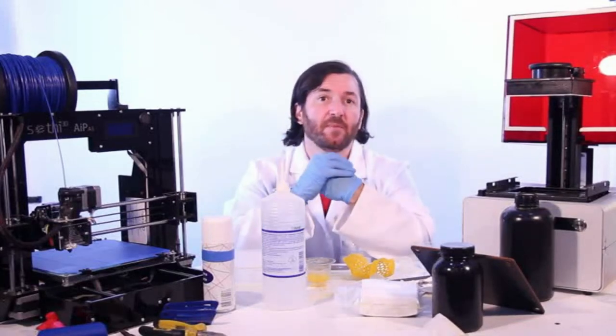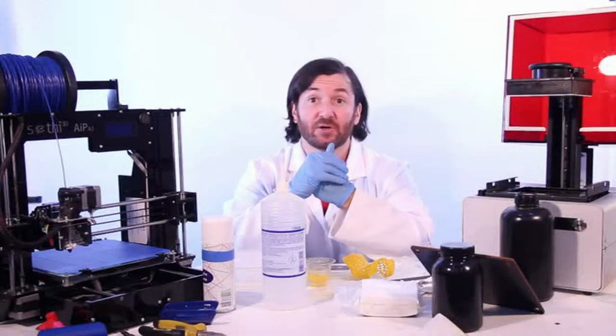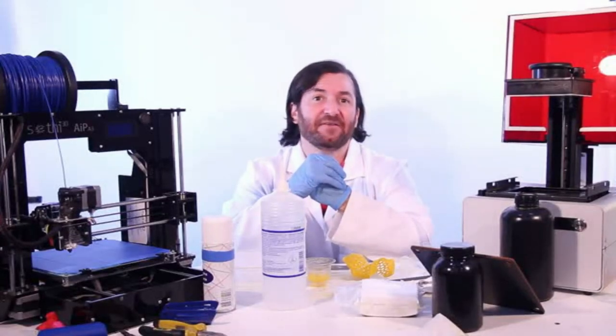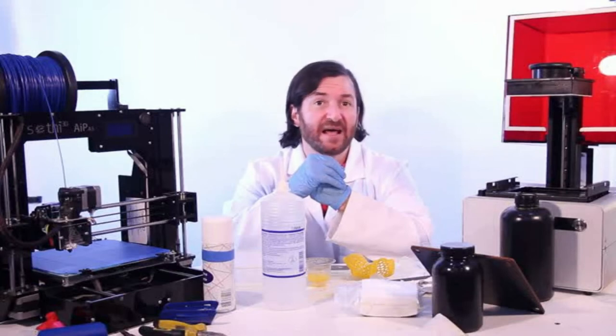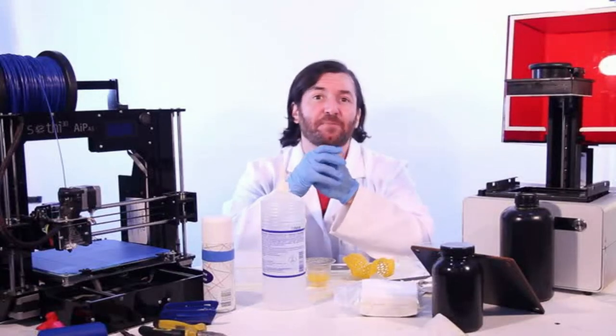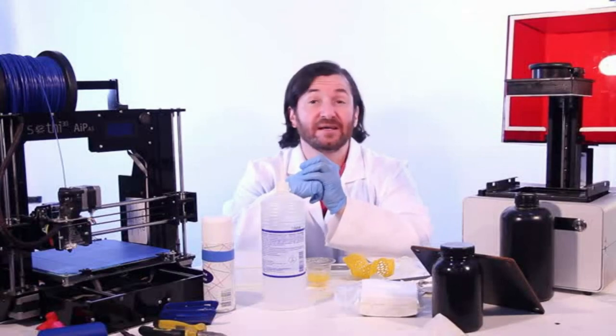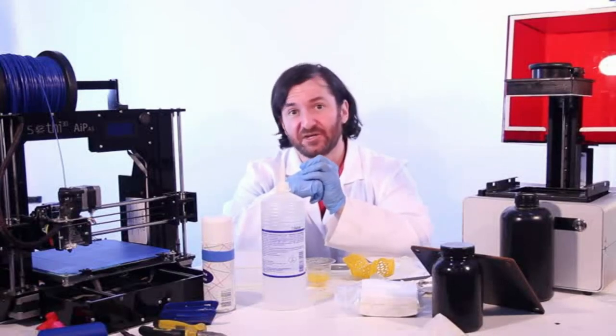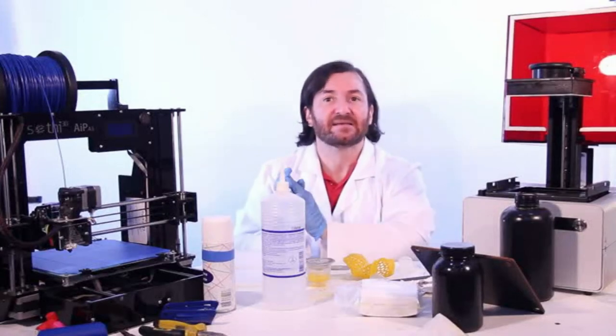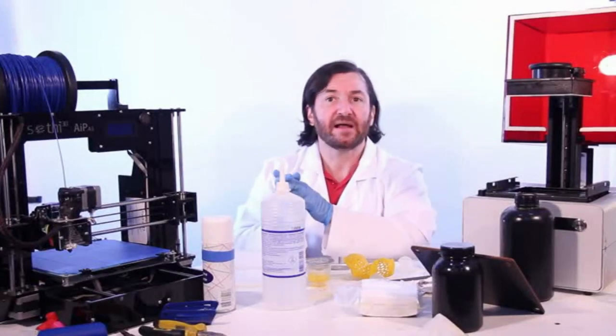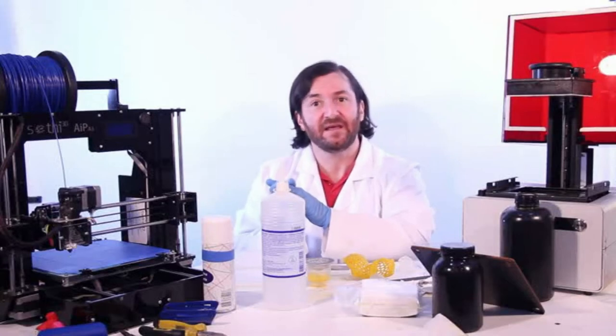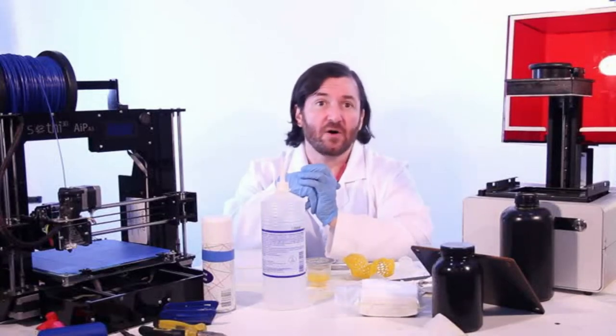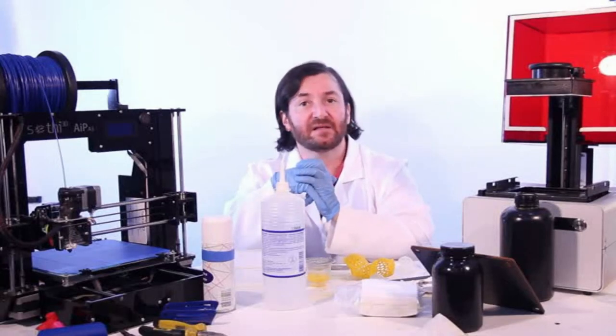So, we got right to the problems of SLA. The vat is a consumable, and Formlabs recommends replacing it after only 2 liters of resin have been used on it. The transparent and non-sticking slab, though, is what matters, so some people came up with a way to change it. It's made of PDMS, a silicone-based compound. A few brands use transparent PTFE instead of PDMS. It's cheaper to replace only the PDMS layer, but not much cheaper.